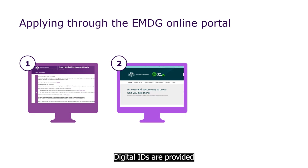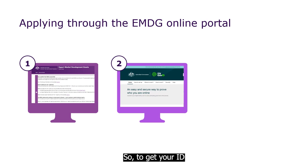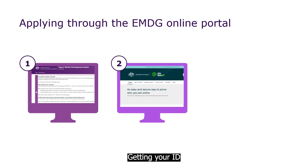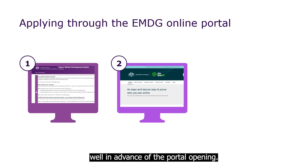Digital IDs are provided by the Australian Tax Office. So to get your ID, go to the homepage of the EMDG Online Portal and follow the links to the ATO's registration page. Getting your ID can take some time though, so our advice is to set up your Digital ID well in advance of the portal opening.